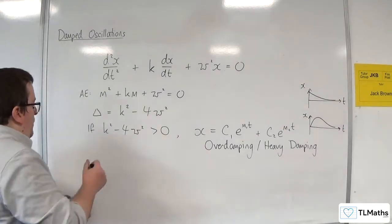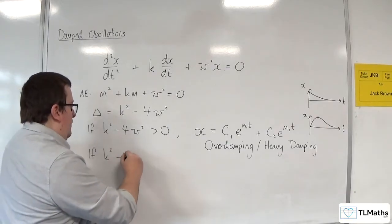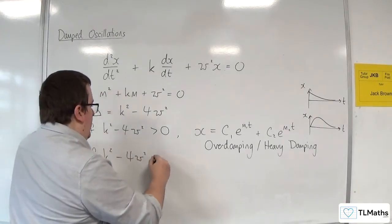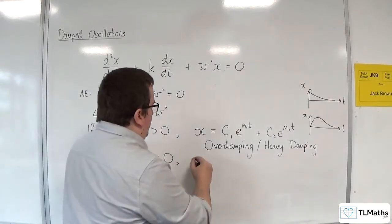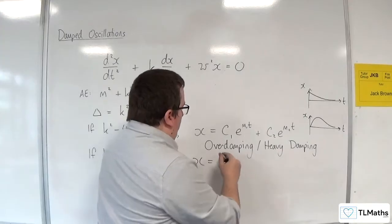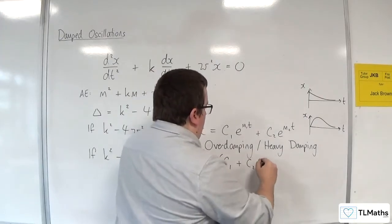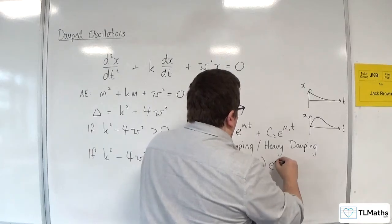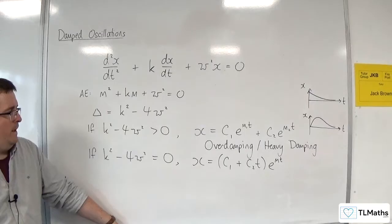If, on the other hand, you have your discriminant being equal to zero, then the general solution looks like this: (C₁ + C₂t)e^(mt).